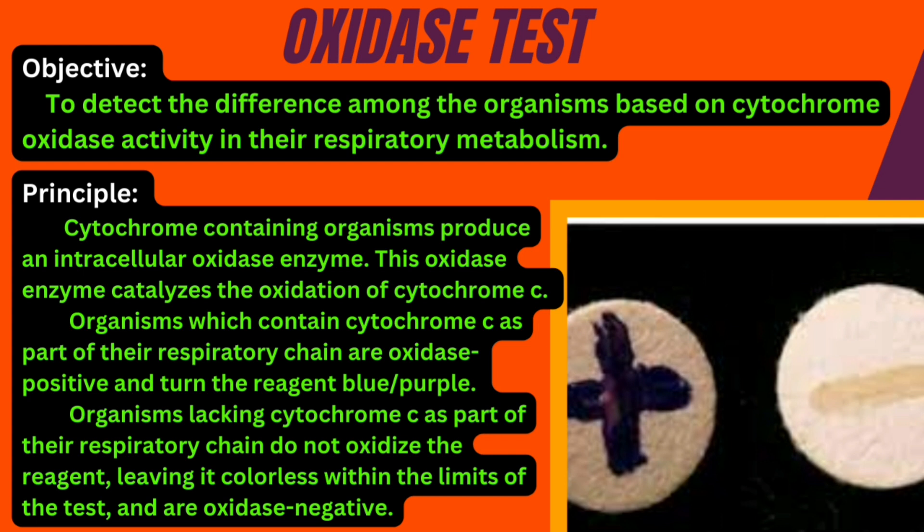Next, we will discuss the principle for cytochrome-containing organisms. In cytochrome-containing organisms, intracellular oxidase enzymes are produced. The oxidase enzyme — specifically cytochrome C oxidase — catalyzes, meaning it makes a chemical reaction happen faster.